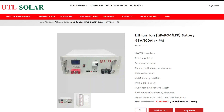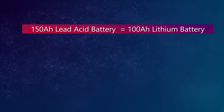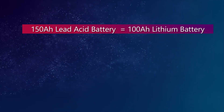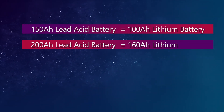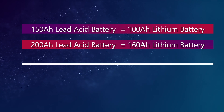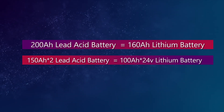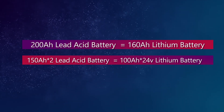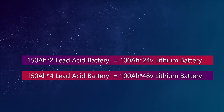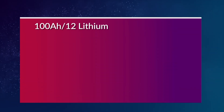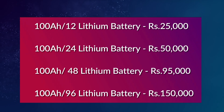To sum up, if you need the backup of a 150Ah lead-acid battery, you can replace it with a 100Ah lithium battery. For higher requirements like a 200Ah lead-acid battery, you can opt for a 160Ah lithium battery, which will cost you around 44,000 rupees. Here the price of lithium batteries is shown with their respective capacities.